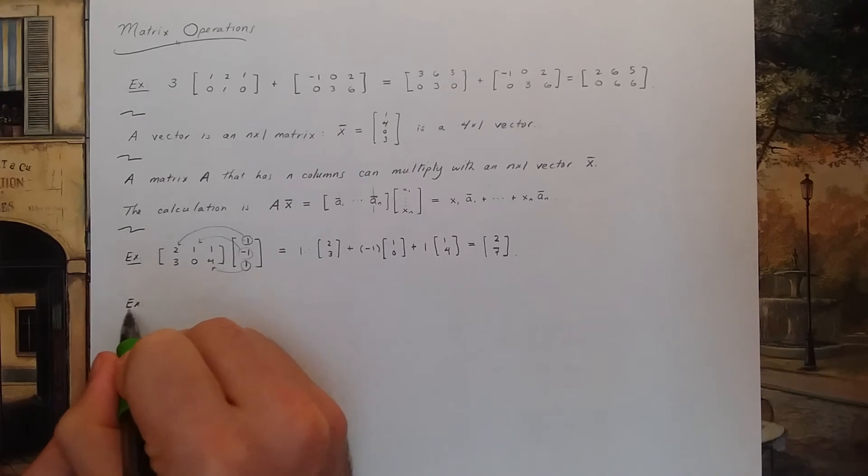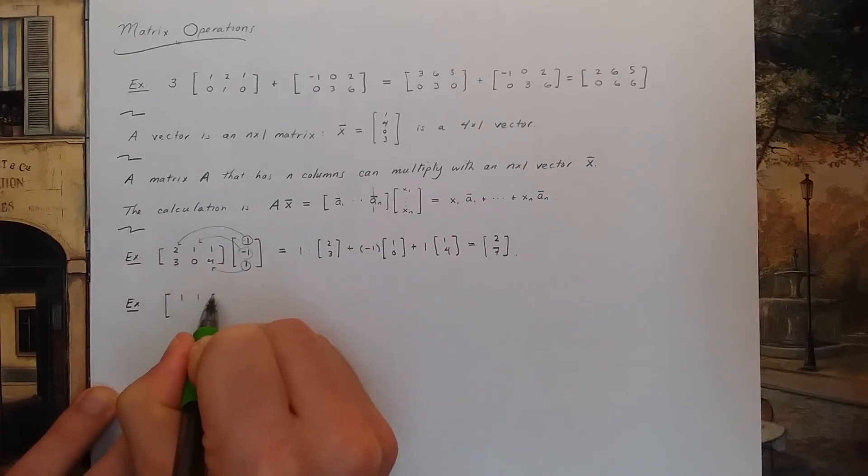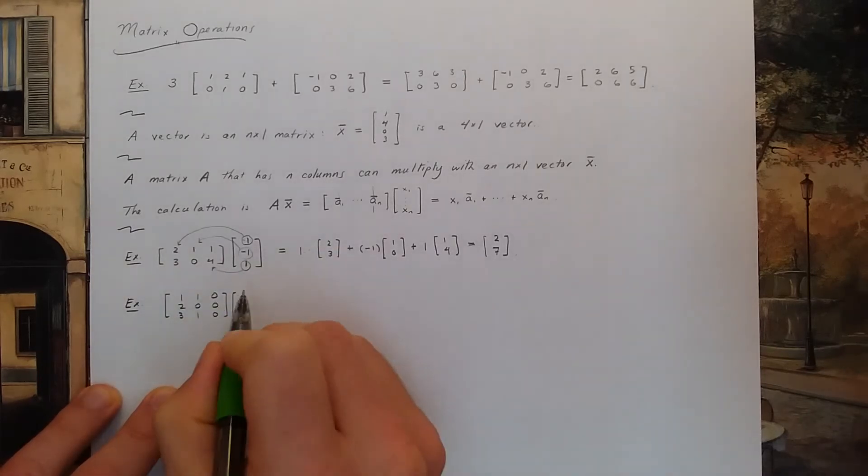Let's do another example. What if I had 1, 1, 0, 2, 0, 0, 3, 1, 0 times the vector 0, 1, 2.